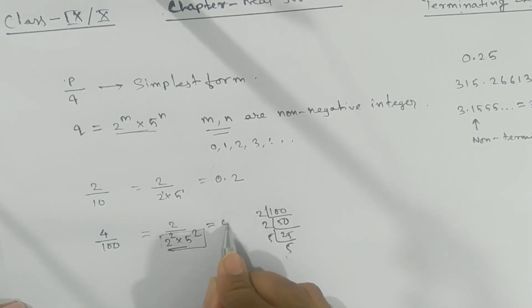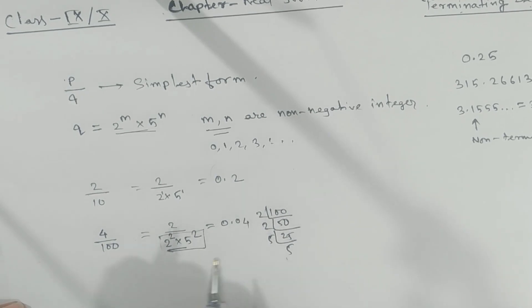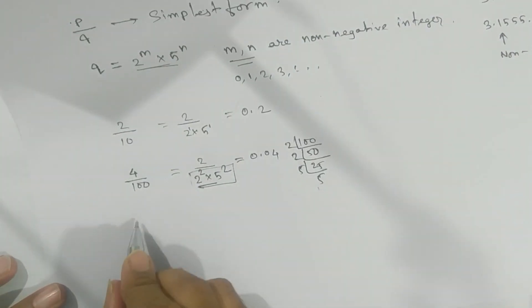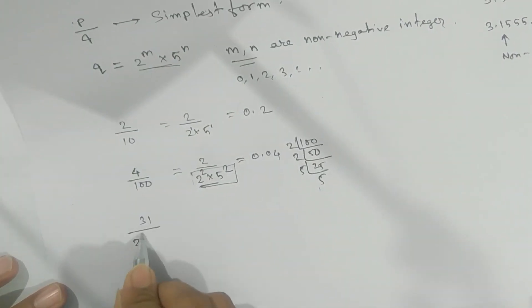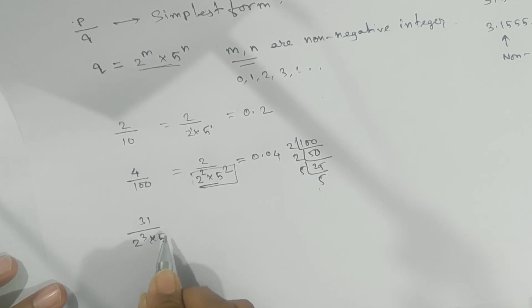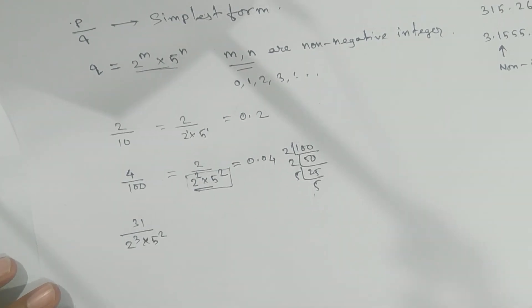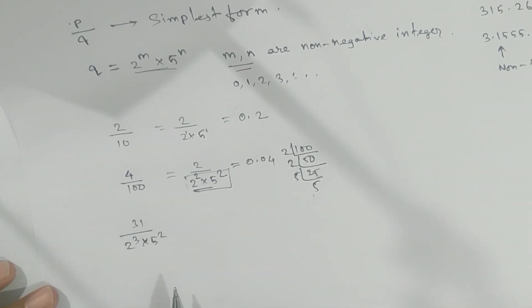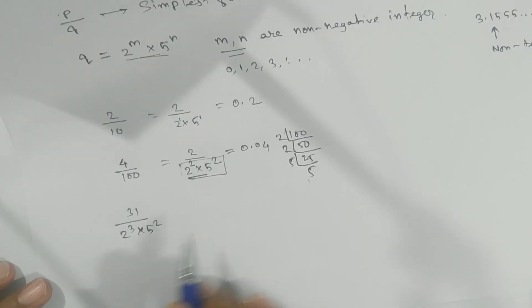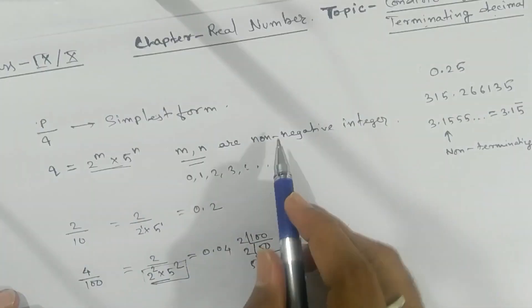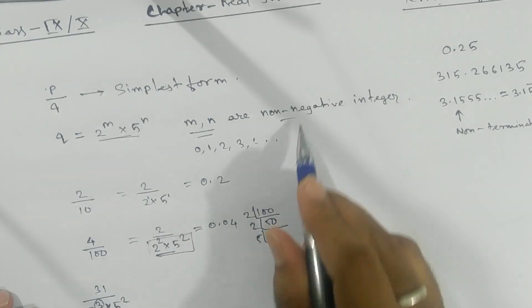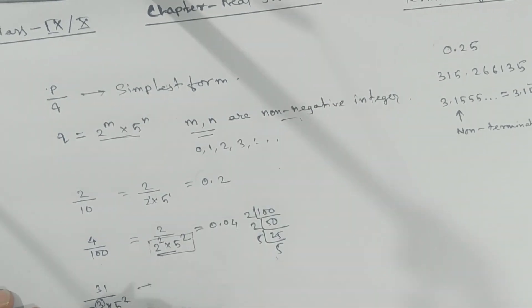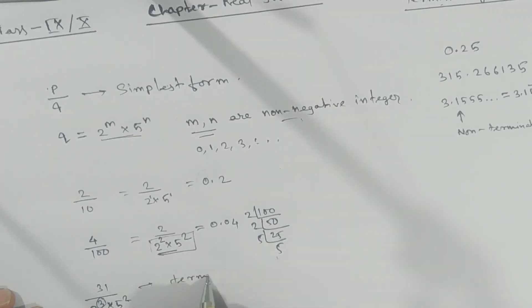Now if we take 31 by 2 to the power 3 into 5 squared — is it a terminating decimal? Yes, it is a terminating decimal. Look here: the exponent 3 is a non-negative integer, and 2 is also a non-negative integer. So we can say that it is a terminating decimal.